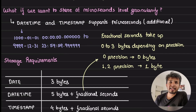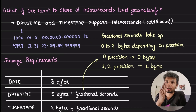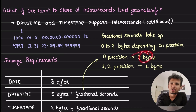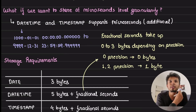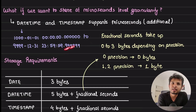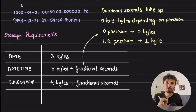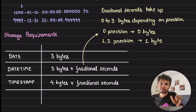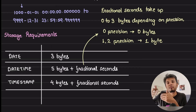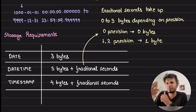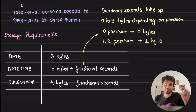Fractional seconds take up zero to three bytes depending on precision. If you don't store fractional seconds at all, it takes zero extra bytes. Two-digit precision requires one extra byte, four-digit precision requires two extra bytes, and six-digit precision requires three extra bytes. So the core storage for datetime is five bytes and timestamp is four bytes, but fractional seconds add zero, one, two, or three bytes on top of that.